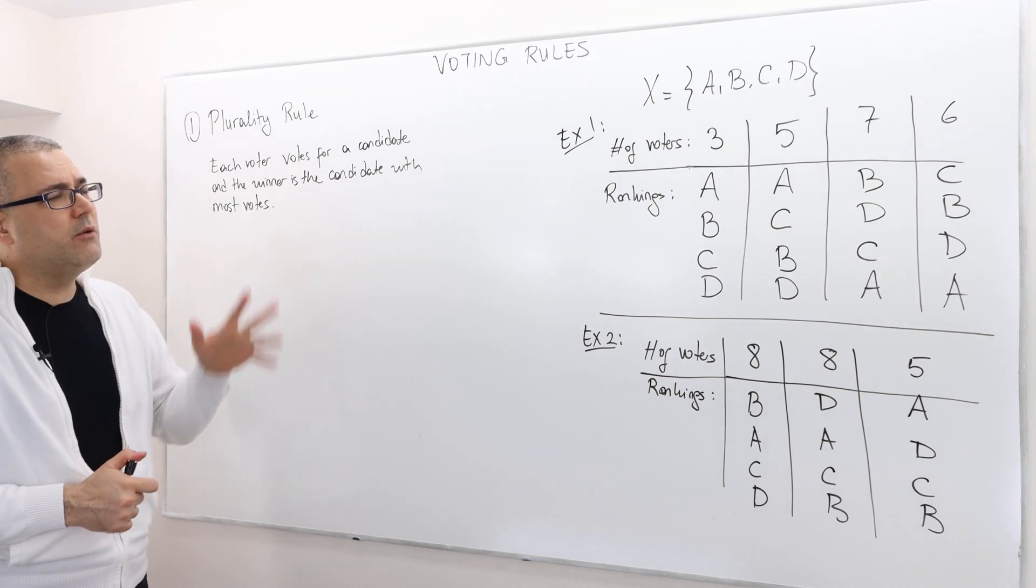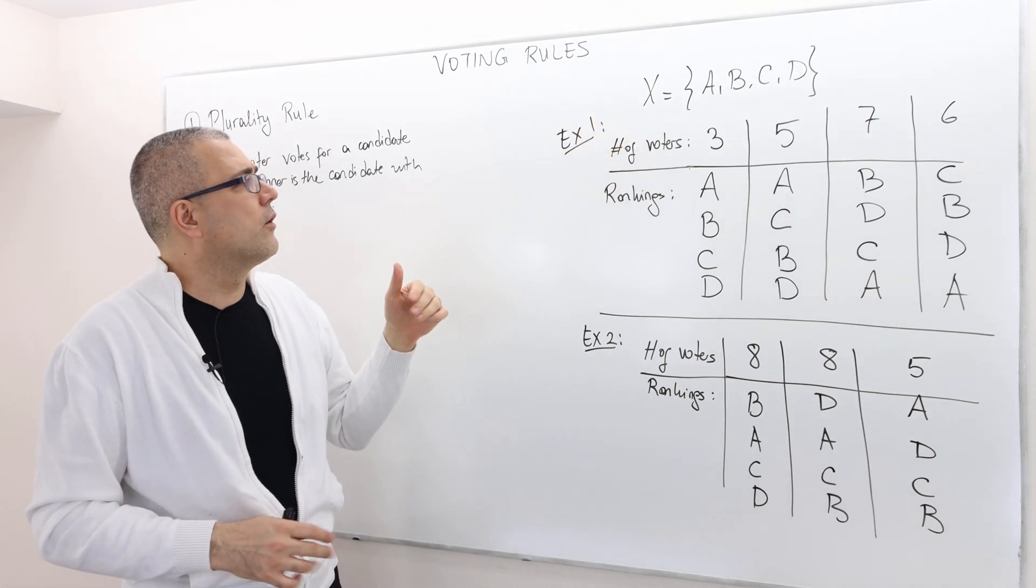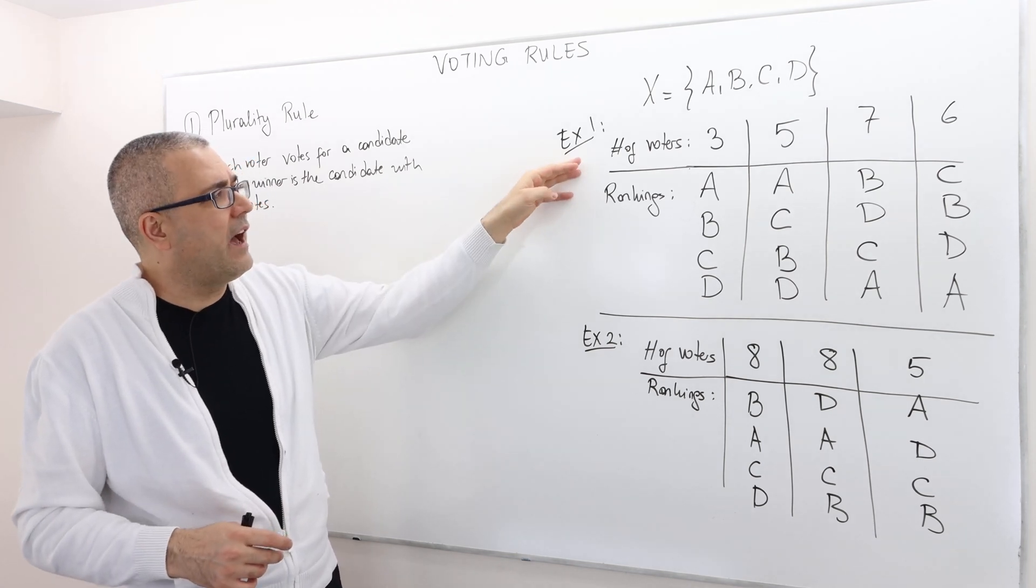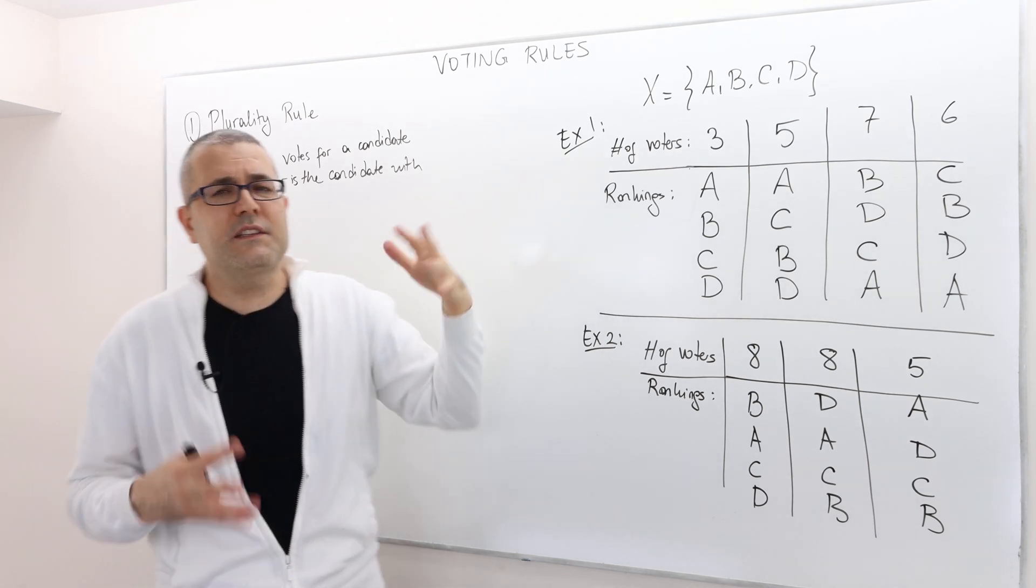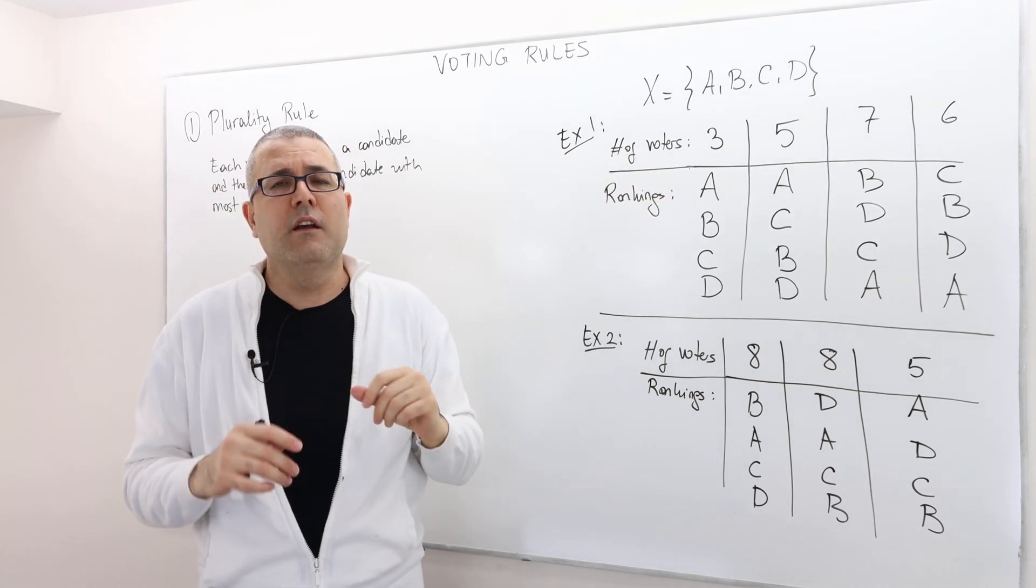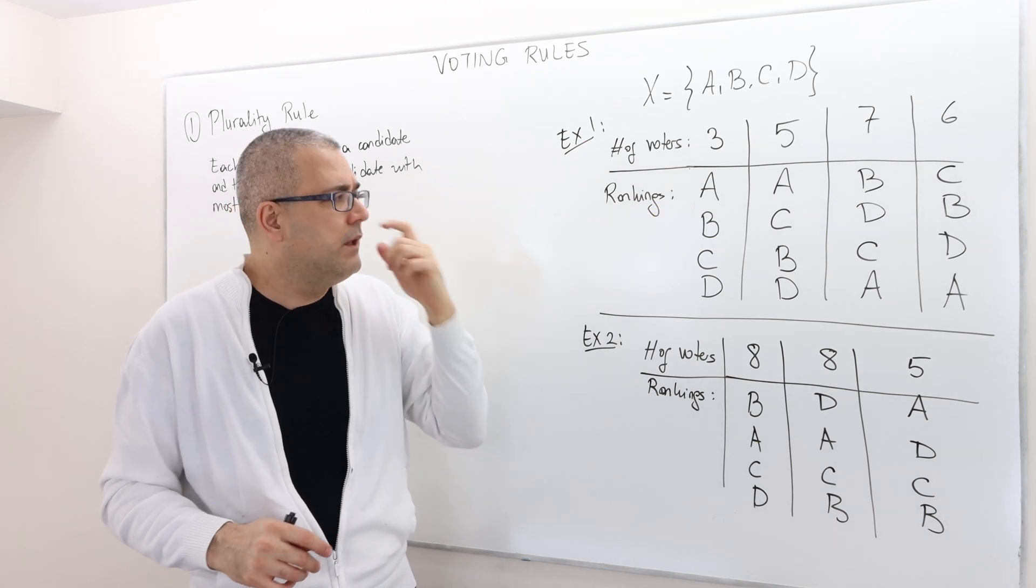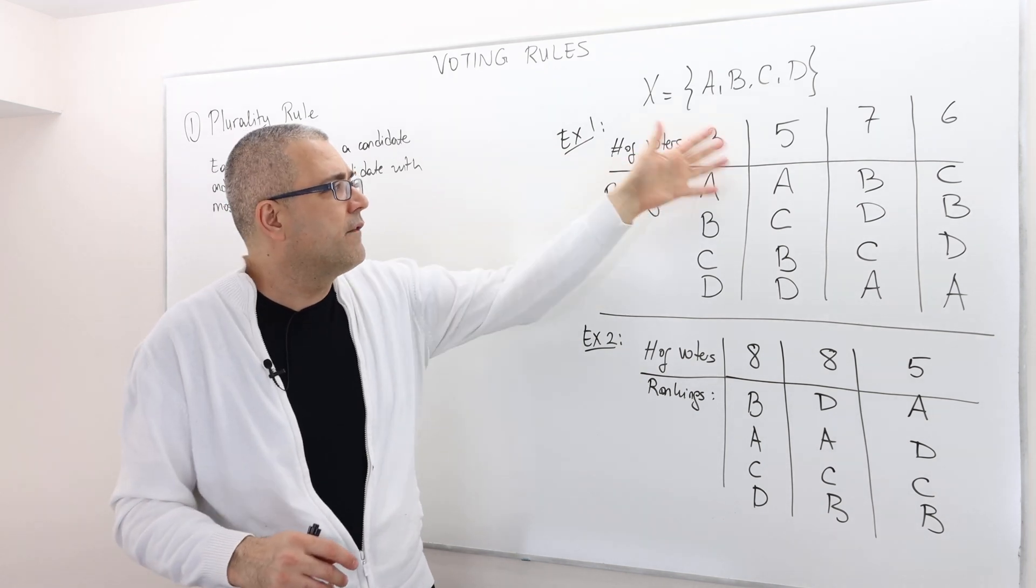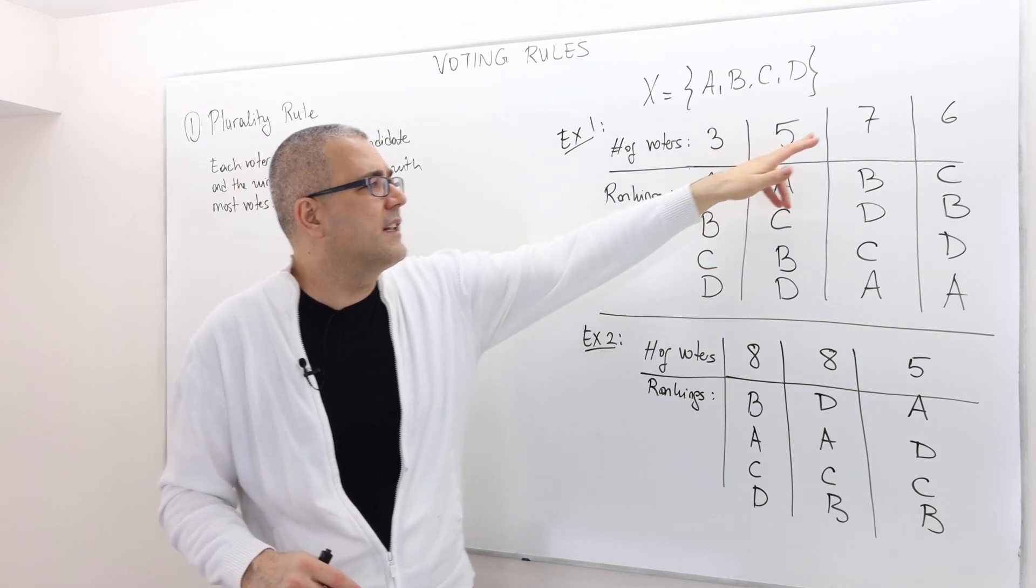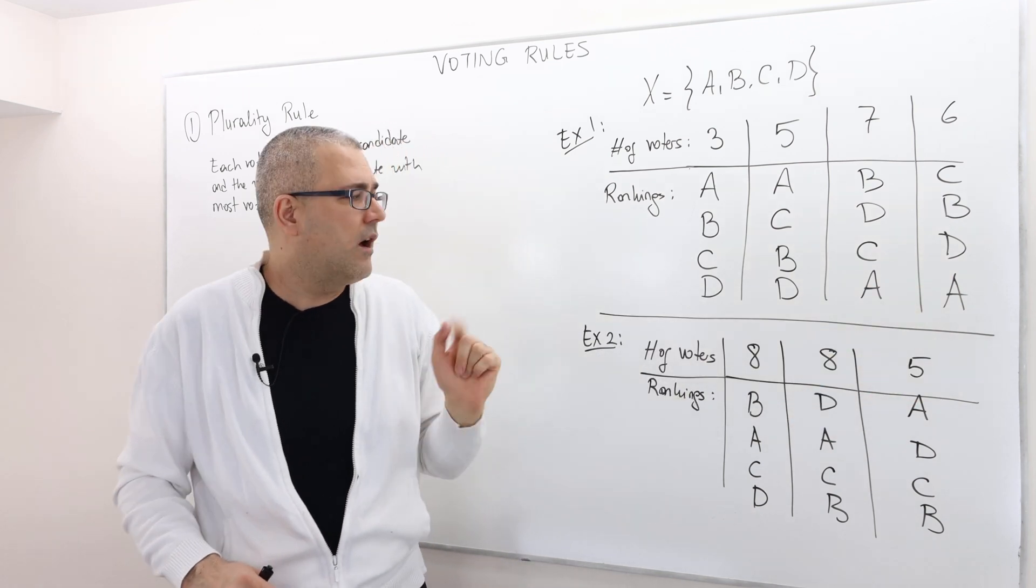So I have two examples. In both examples, I have four alternatives or candidates, A, B, C, D, and here I have the number of voters. So let's suppose three voters. I have, by the way, 21 voters. So the three voters rank A to B, B to C, and C to D, and five candidates rank A to C, C to B, and B to D, and then seven candidates rank this way, six candidates rank this way.